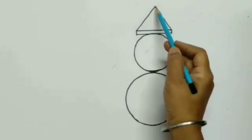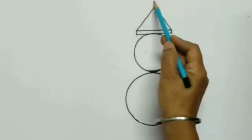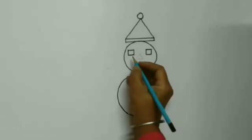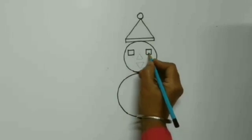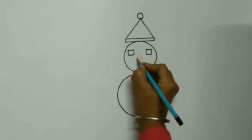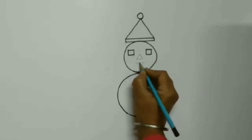At the top of the triangle, draw a small circle. For eyes, draw two small squares. Draw face and nose with the help of triangle.